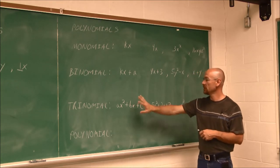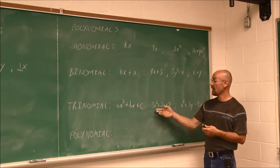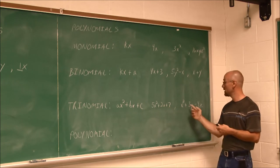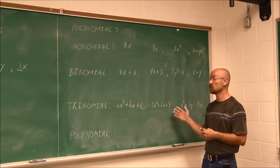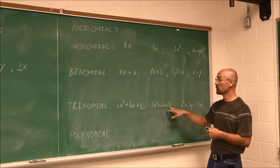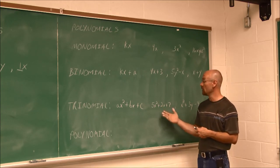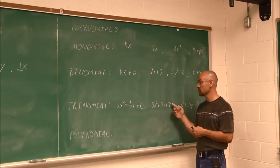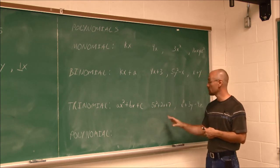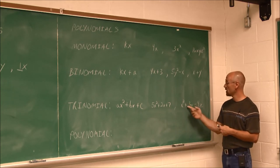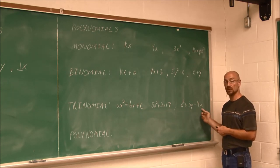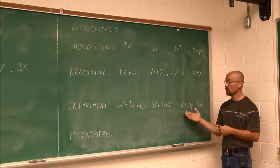Finally, a trinomial, three different terms. They may have the same variable. They may have different variables. But what we're looking at to identify is how many terms do we have? We have one, two, three terms, making it a trinomial. 5x squared plus 2x plus 7 separated by addition or subtraction. Three terms, trinomial. Here, we have x squared plus 3y minus 4z. Again, another trinomial.